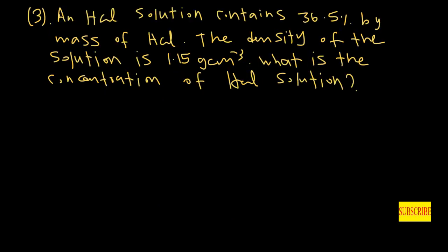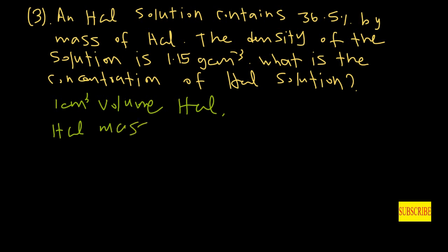An HCl solution contains 36.5% by mass of HCl. The density of the solution is 1.15 grams per cubic centimeter. What is the concentration of this HCl solution? Let's consider one cubic centimeter volume of this solution. The mass of HCl in one cubic centimeter is 1.15 grams.